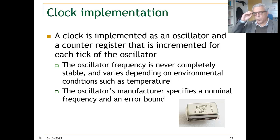Let's look now to local clock implementations on a machine. A clock is implemented as an oscillator and a counter register that is incremented for each tick of the oscillator, for each period of the oscillator basically. The oscillator frequency is never completely stable. It varies depending on environmental conditions, for example temperature or pressure. The oscillator manufacturer for each physical clock specifies a nominal frequency and also an error bound. The most important thing here is that it specifies an error bound, and that's what we are going to use. The manufacturer guarantees an error bound.